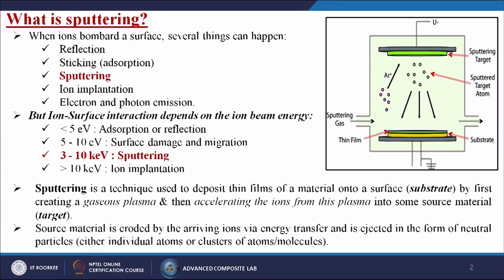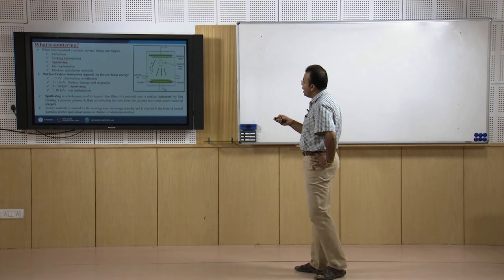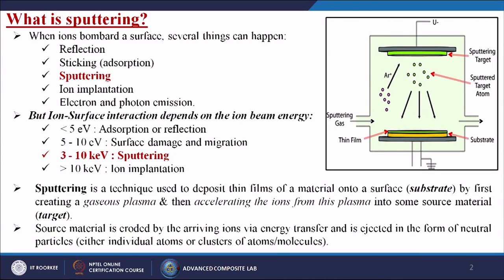Sputtering is defined as a technique used to deposit thin films of a material onto a surface — generally called a substrate — by first creating a gaseous plasma and then accelerating the ions from this plasma into some source material called the target. The source material is eroded by the arriving ions through energy transfer and is ejected in the form of neutral particles, either individual atoms or clusters of atoms and molecules, which then deposit as a thin film onto the substrate.